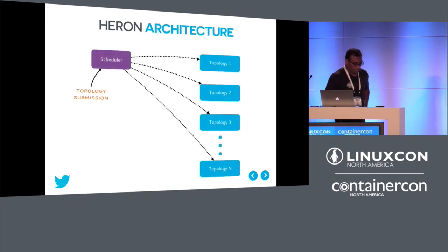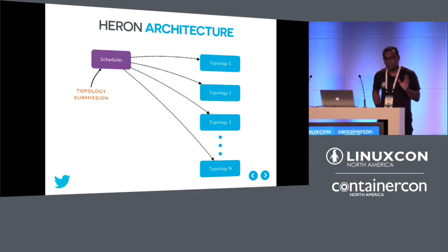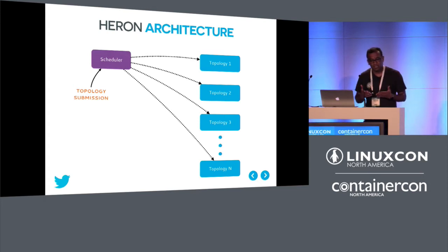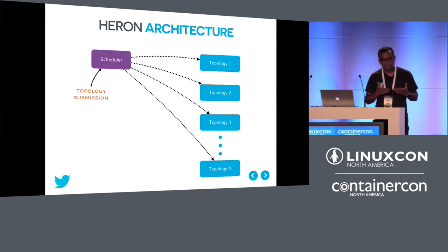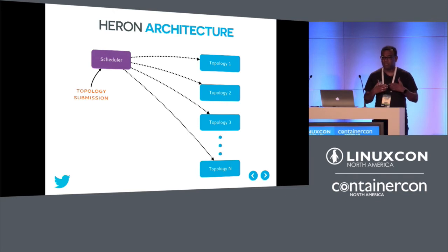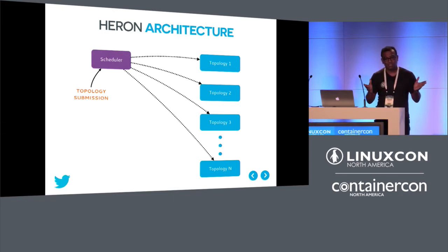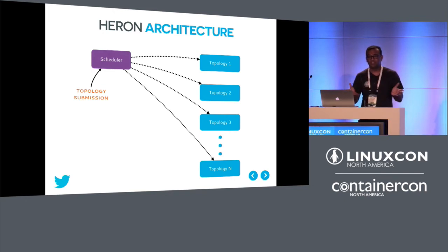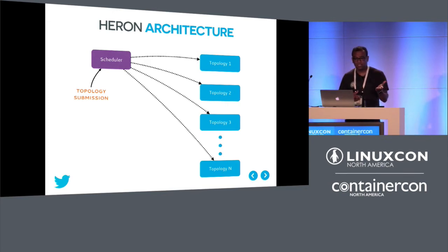A major addition in Heron was moving away from a custom scheduler. Since Mesos, YARN, and managed schedulers like Aurora and Marathon have large communities and are very stable, we just provide a mapping to whichever scheduler you want to use. A Heron real-time job looks like any other job to a scheduler, except that streaming jobs are always running until you kill them. You submit a topology to an existing scheduler, and it runs alongside other critical services in a multi-tenant cluster.